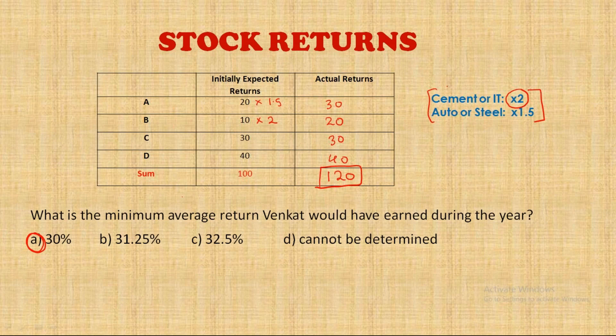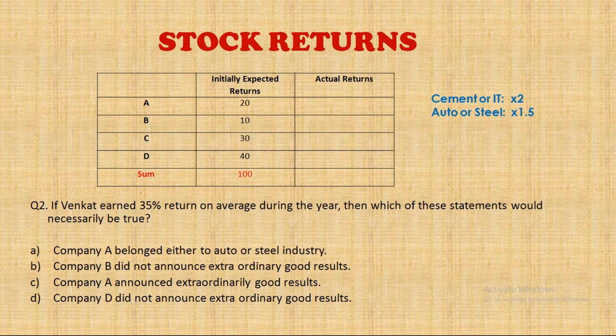The second question says: if the investor earned a 35 percent average return, that means the average of all four companies is 35. So 35 × 4 = 140 is the total. This means we need to extract 40 rupees extra, and the only way is for one company to give double and another to give 1.5 times the expected return.